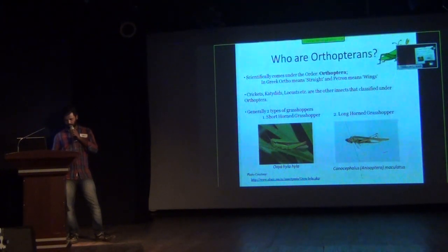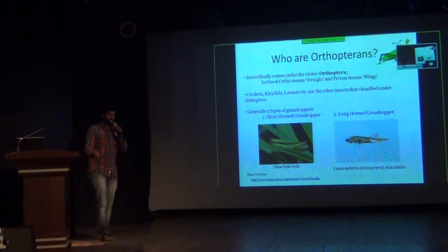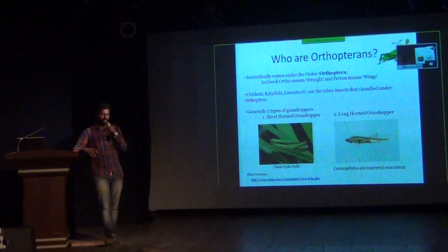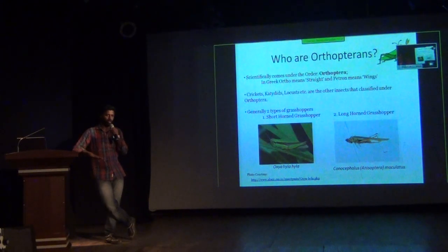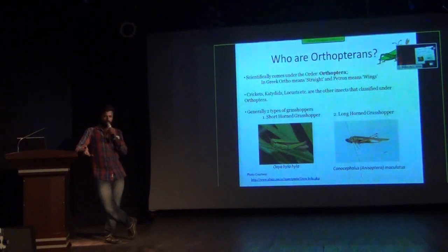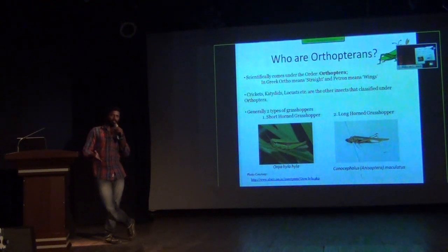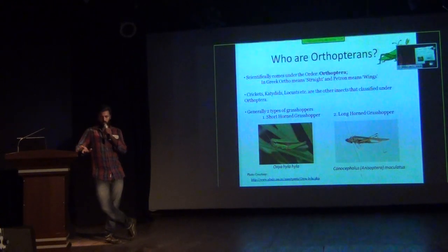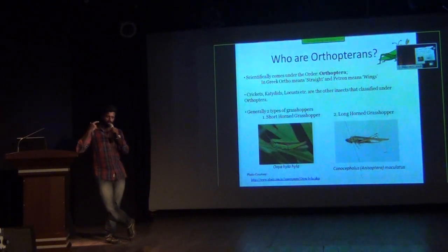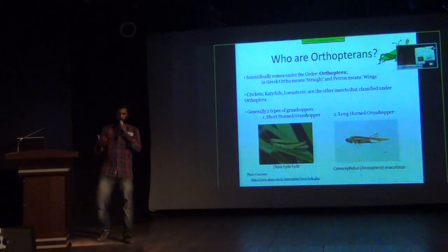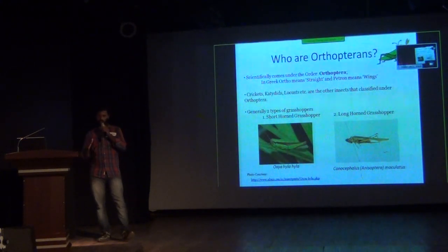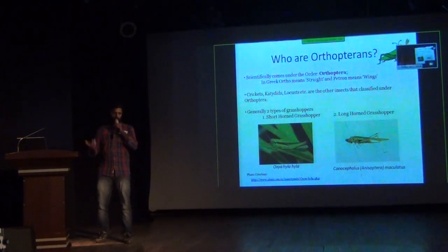Crickets, katydids, and locusts all belong to Orthoptera. Conventionally, Orthoptera is known to consist of short-horned grasshoppers as well as long-horned grasshoppers. 'Horned' refers to the antenna. So if the antenna has below 30 segments, it's called a short-horned grasshopper, and if it has above 30 segments, it's called a long-horned grasshopper.